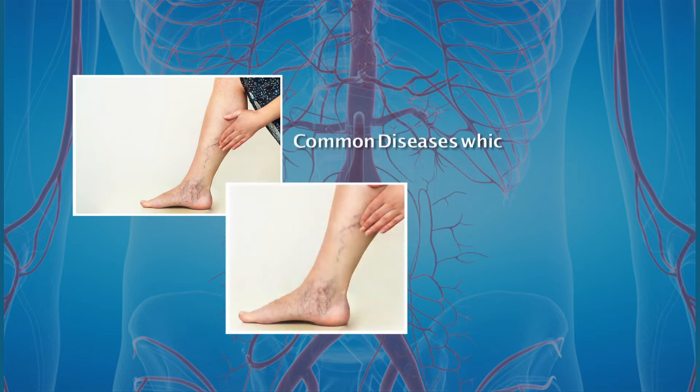The commonest diseases which affect the vascular system are peripheral vascular occlusive diseases and aneurysmal diseases of the blood vessels. The commonest venous diseases are varicose veins and DVT.